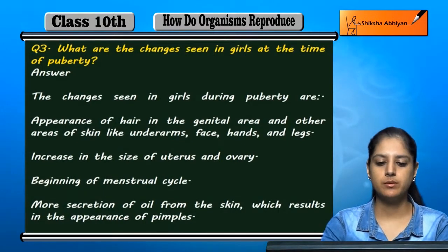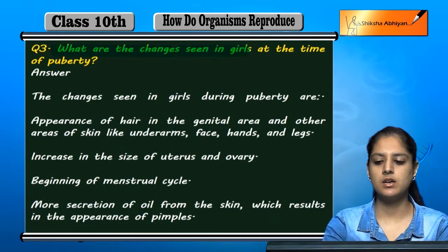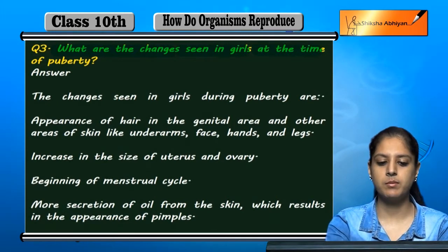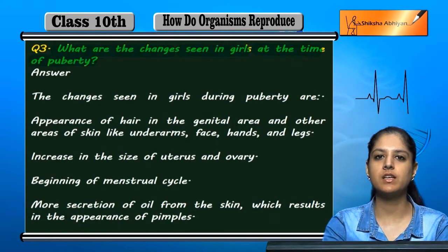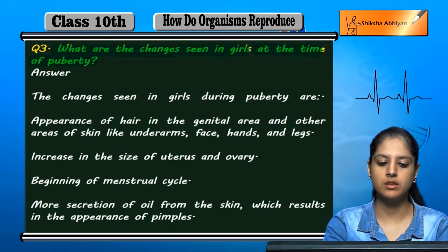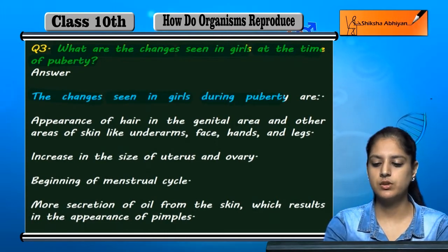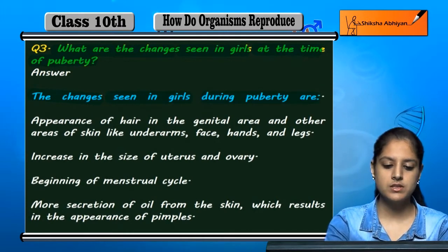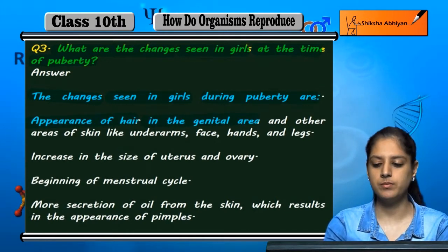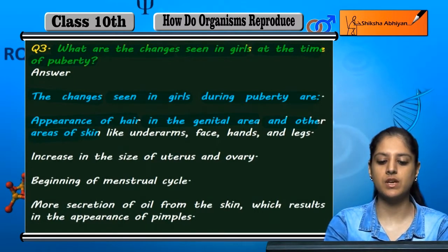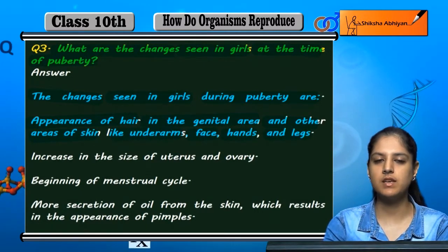Question number 3: What are the changes seen in girls at the time of puberty? What are the changes that can be seen in girls during puberty in the genital area and other areas of skin like underarms, face, hands and legs?